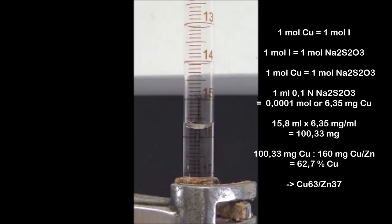15.8 milliliters of a 0.1 N sodium thiosulfate solution was consumed. Since each milliliter of standard solution corresponds to a ten thousandth mole, and thus 6.35 mg of copper, our sample solution contains 100.33 mg of copper. With a weight of 160 mg brass, this corresponds to a copper content of 62.7%.